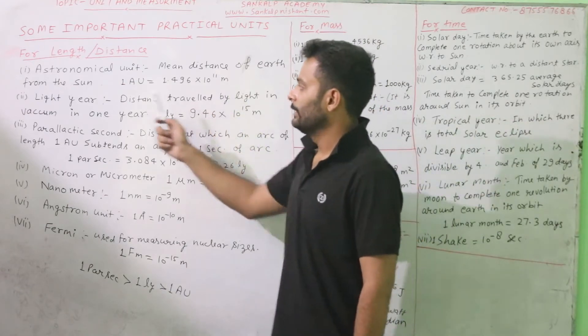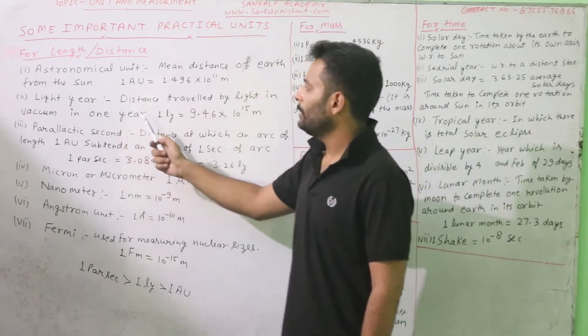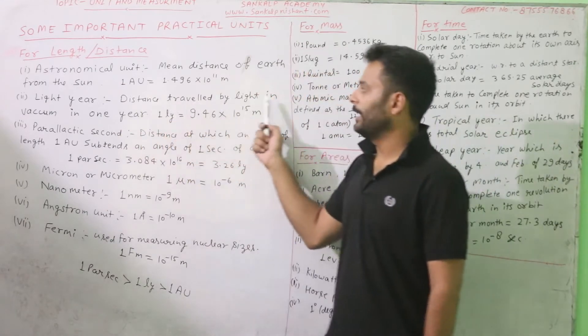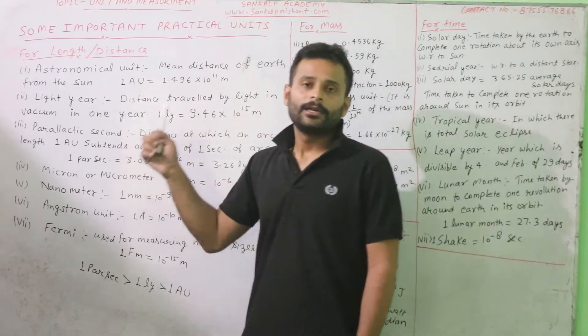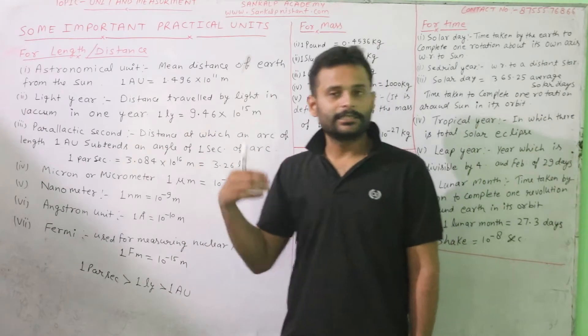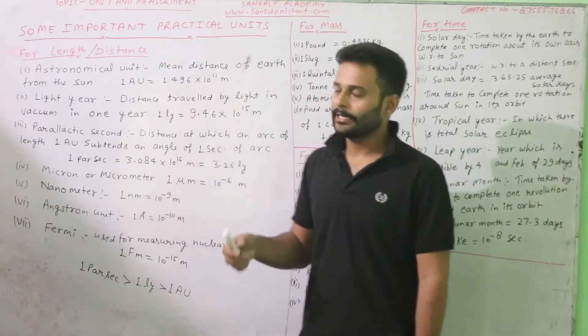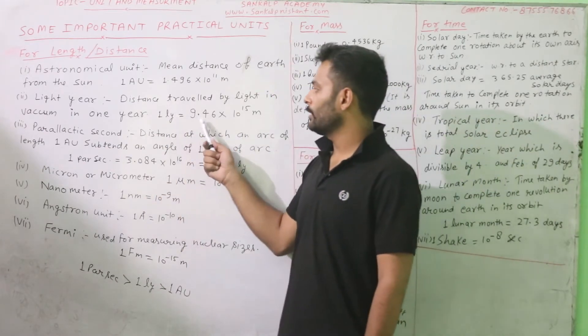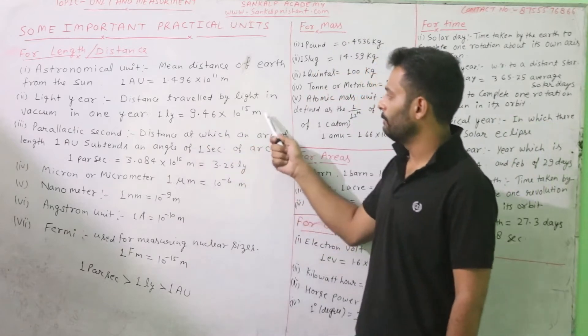Second one is light year. Light year, which is the distance traveled by light in vacuum in one year. In one year, the vacuum light. And one light year equals 9.46 into 10 to the 15 meters.